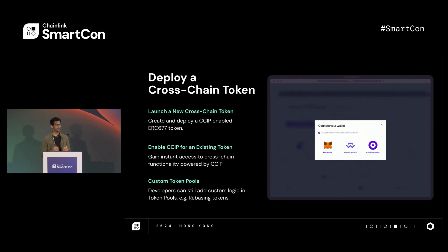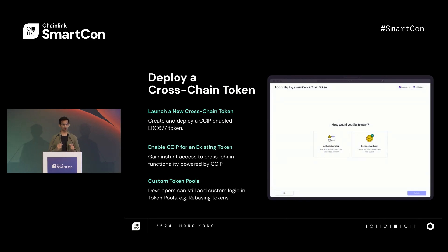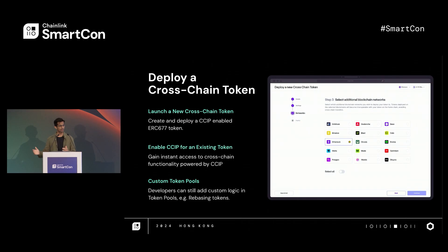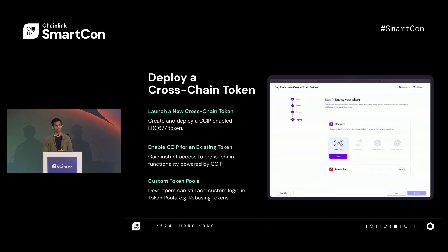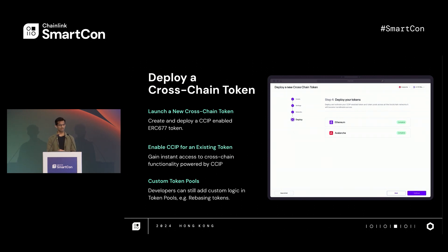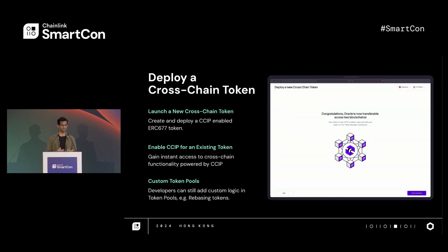Token developers can deploy cross-chain tokens entirely on their own. This applies for launching a new token, as well as taking an existing token cross-chain with CCIP. As a developer, you'll be able to do this using our CLI tools, or you'll be able to use the token manager, which is a new interface that we're releasing. The token manager is what you're seeing up on the screen right now, and you'll see it in a bit more detail in a video that's coming up soon.